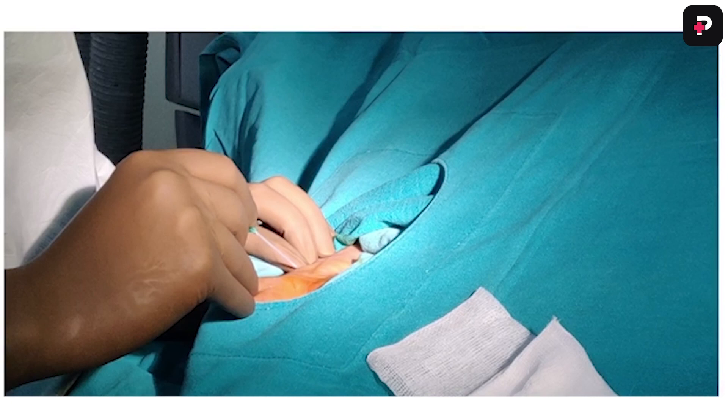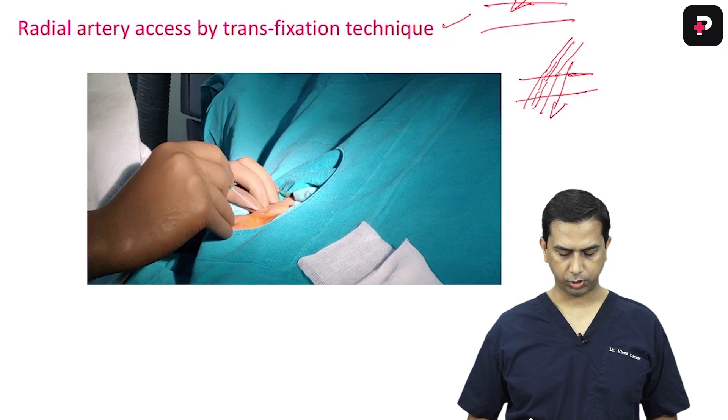I use my pulp and nails for feeling the artery. This is useful because the fingernails give you an outer border of the artery — since fingernails are insensitive, if you feel the pulse that way, it marks the point beyond which there is no artery, and you puncture at exactly that point.